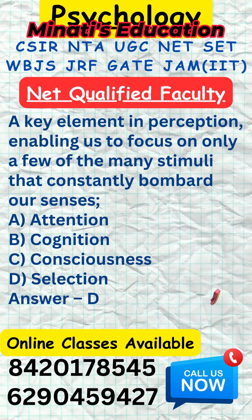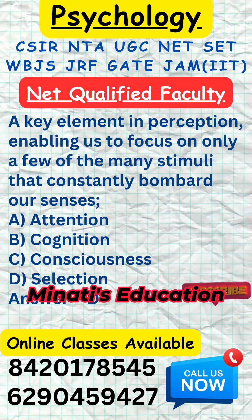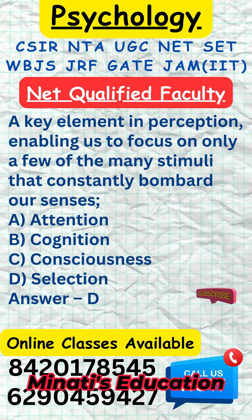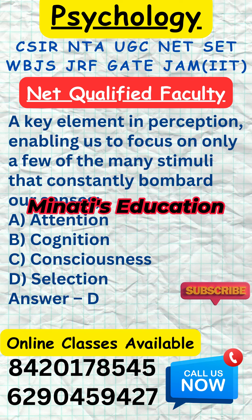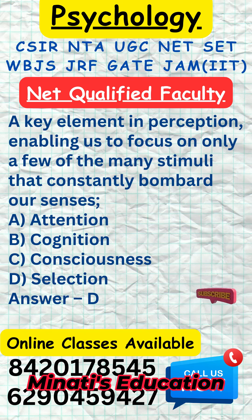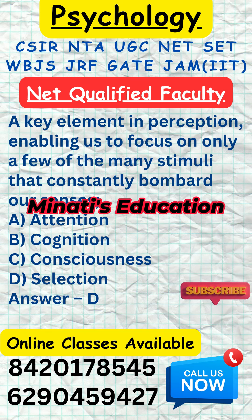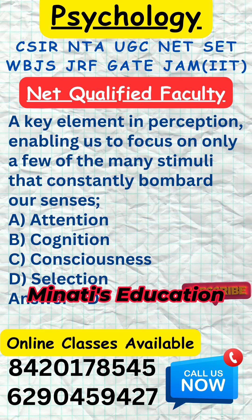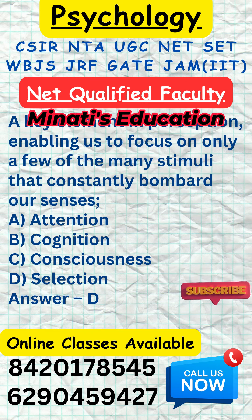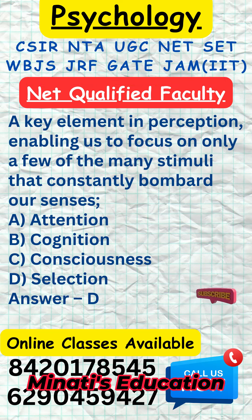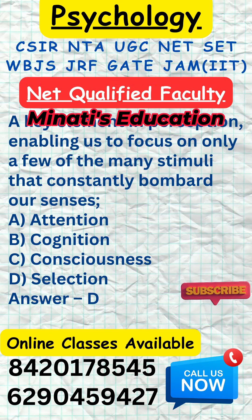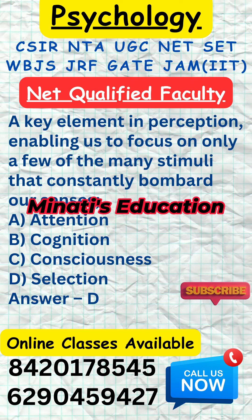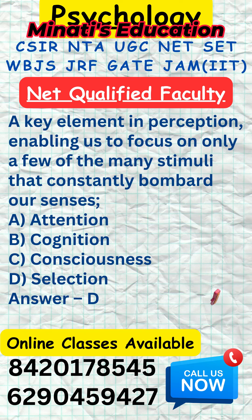Attention allows us to focus on specific stimuli while filtering out others. Cognition, consciousness, and selection are all related to perception, but attention is the specific process of focusing on a limited amount of sensory information. Attention is the cognitive process that allows us to selectively focus on specific stimuli while ignoring others. This ability enables us to manage the vast amount of sensory information we encounter at any given moment.